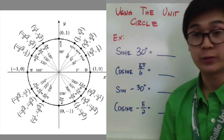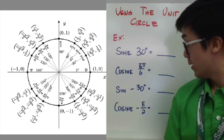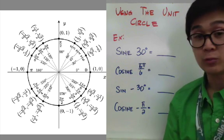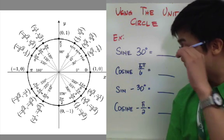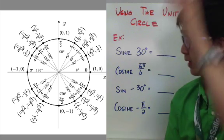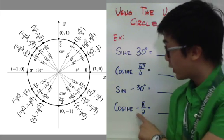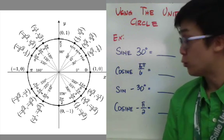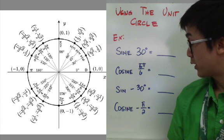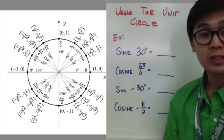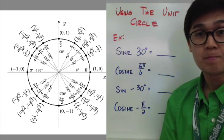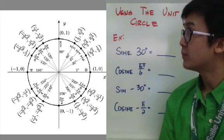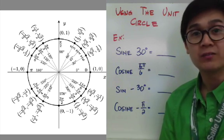For cosine of negative π/2: negative π/2 is opposite to 90 degrees, which means it corresponds to 270 degrees on the unit circle. Therefore, cosine of negative π/2 is equal to 0. That's how we use the unit circle to find the values of special angles.